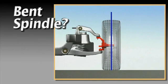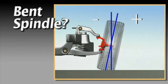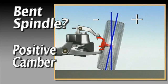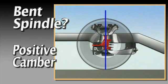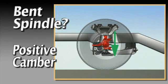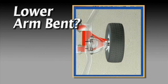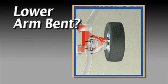Next, suppose the spindle was bent. Bending the spindle down will certainly create positive camber, but bending the spindle up or down will have little effect on caster.